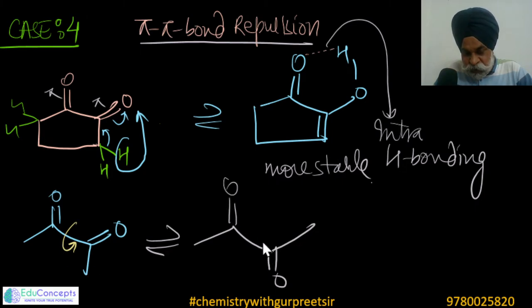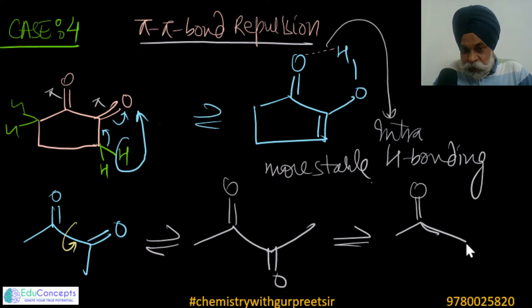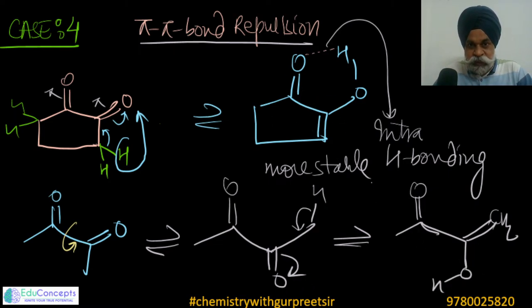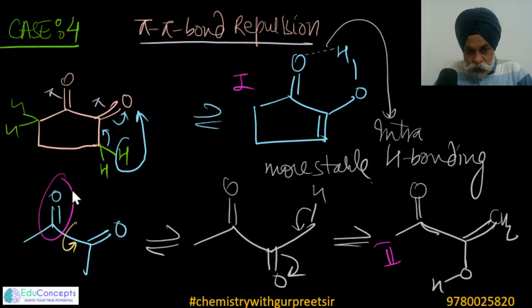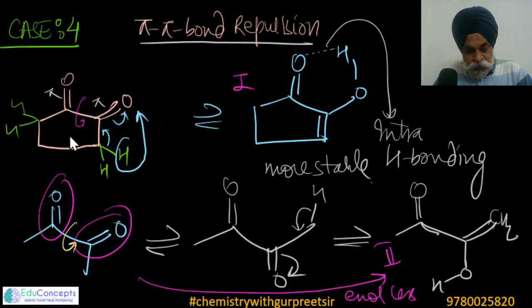The pi-pi repulsion decreases in the enol form, and intramolecular H-bonding further decreases repulsion and increases stability — so enol is more stable here. Contrast: if you rotate the bond in a flexible analog, the pi-pi bonds become distant. Enolization of that rotamer gives an enol without H-bonding, so enol content is less in that conformer compared to the first. Although both have adjacent carbonyls, the restricted rotation in the first compound gives more enol content.